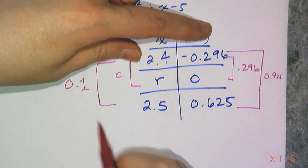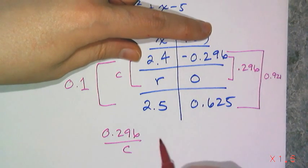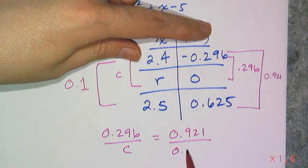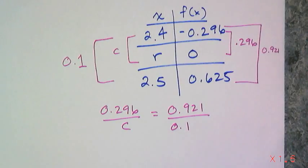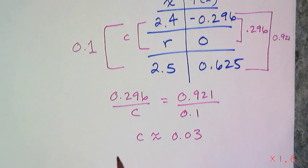I can say 0.296 over c is going to equal to 0.921 over 0.1. And then just solve for c, and that's just basic proportion.